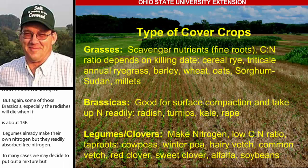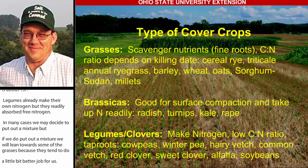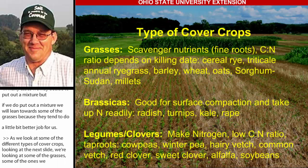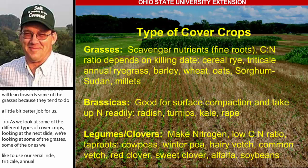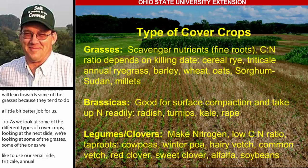Looking at specific grasses: the ones we like to use are cereal rye, triticale, annual ryegrass, barley, and wheat. Oats is probably one of the best, but it depends on time of year — if you're going into winter, the oats can die off. Sorghum and most of the millets are summer annuals, so they will die with the first frost.